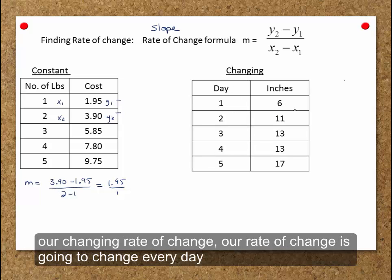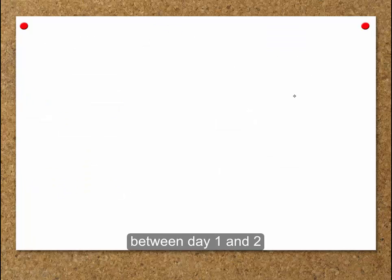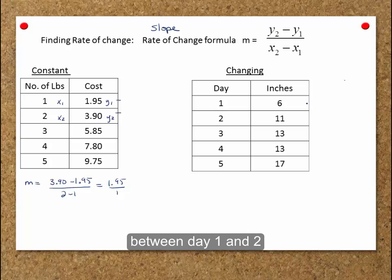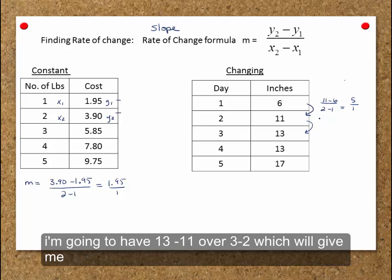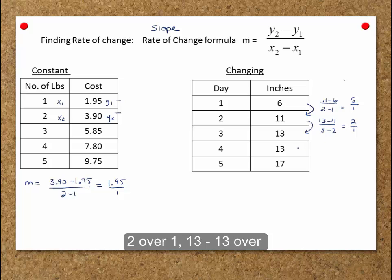Our changing rate of change. Our rate of change is going to change every day. Between day 1 and 2, I'm going to have 11 minus 6 over 2 minus 1, which will give me 5 over 1. Between days 2 and 3, I'm going to have 13 minus 11 over 3 minus 2, which will give me 2 over 1.